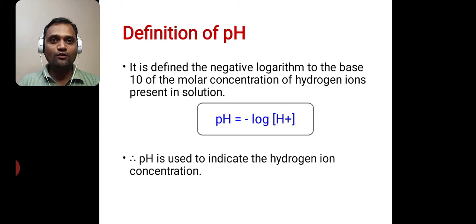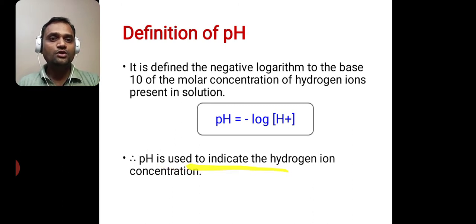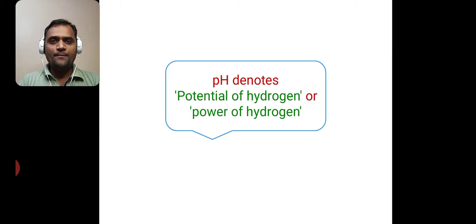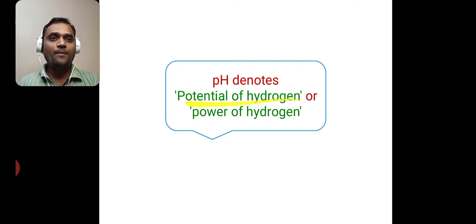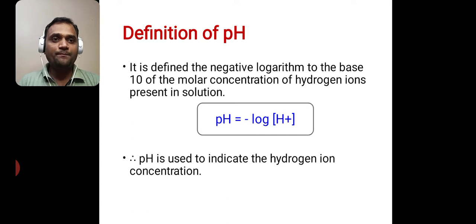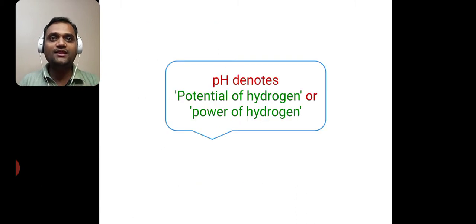So what is pH? The negative logarithm to the base 10 of the molar concentration of hydrogen ions present in solution. Therefore, pH is used to indicate the hydrogen ion concentration. Many students ask: what is the full form of pH? The full form of pH is 'potential of hydrogen' or 'power of hydrogen.' By measuring the pH, it gives us the hydrogen ion concentration — that is, the potential or power of hydrogen.